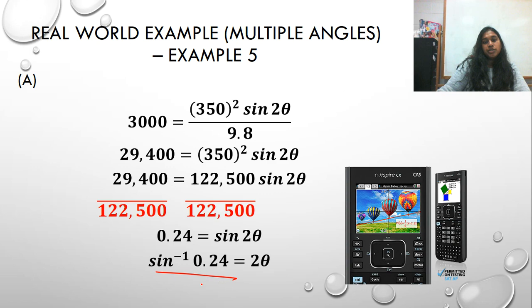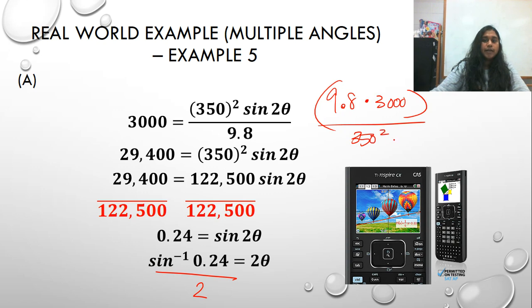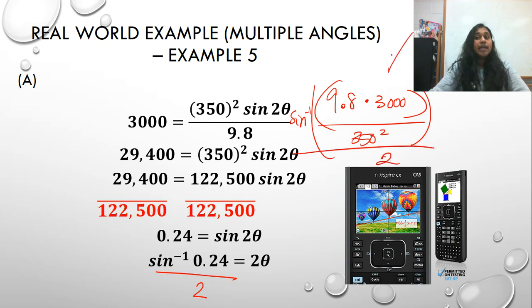So if I gave you this question without a calculator, then this might be the expectation, would be 9.8 times 3,000 divided by 350 squared, and you would inverse sign that, and then you would divide by 2. And it would be okay to leave your answer like this, okay, because if you had no calculator, I'm checking, did you know how to do the setup? Did you understand how to do an order of operations and finish the solve for theta?